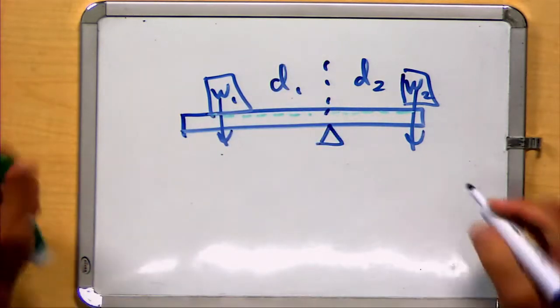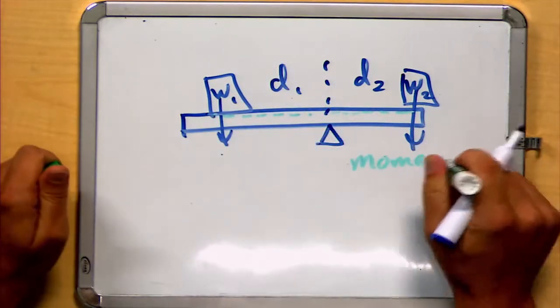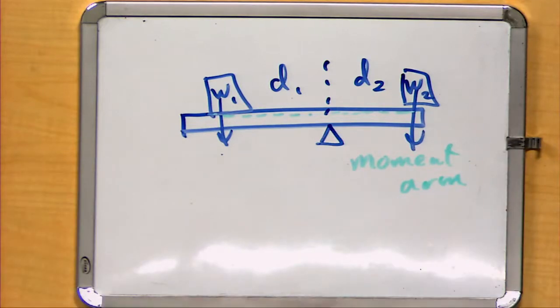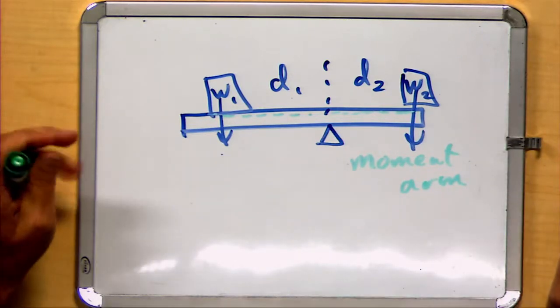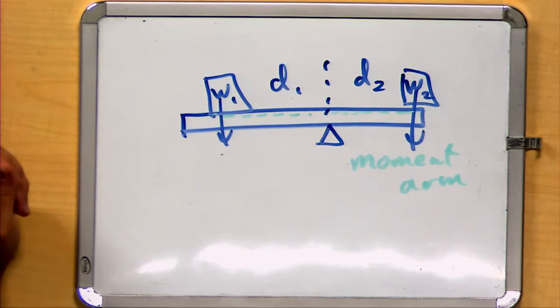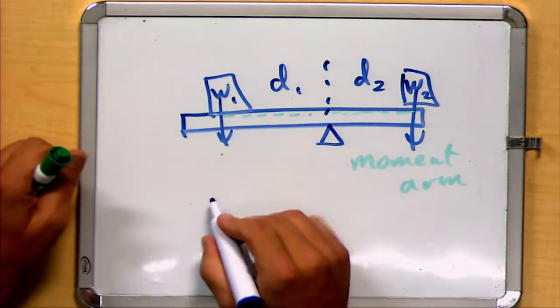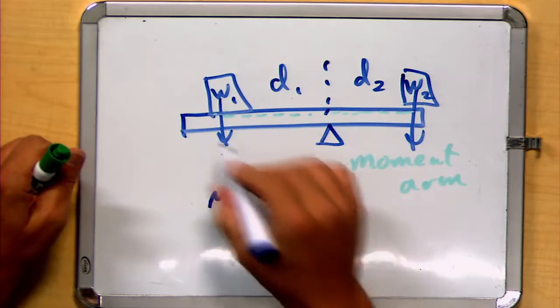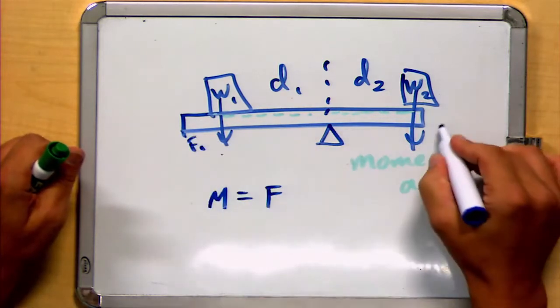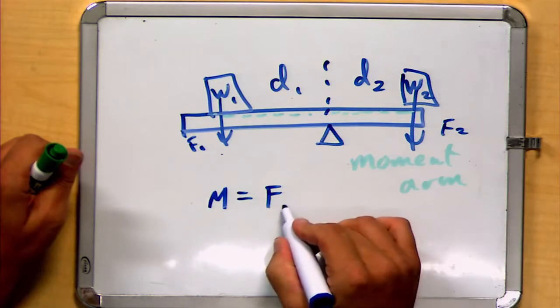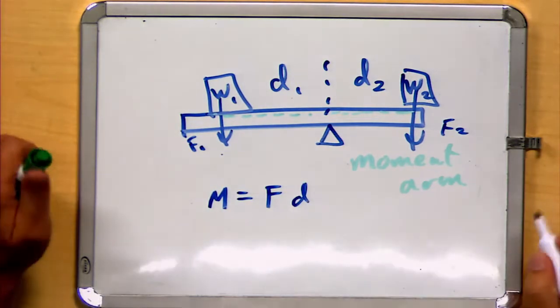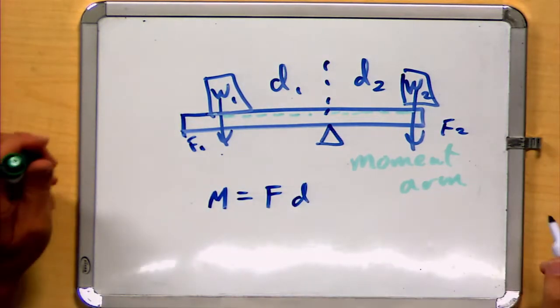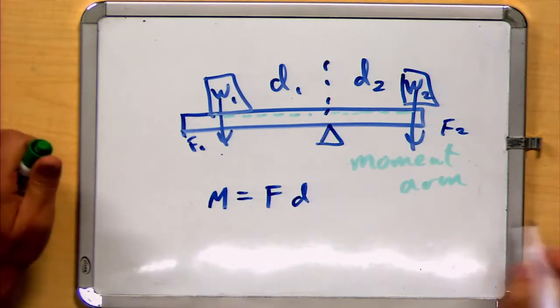And we call this the moment arm. And our example in this case was something that we actually called moment, which is also sometimes in physics class called torque. In this case, the moment was equal to the force times the distance.